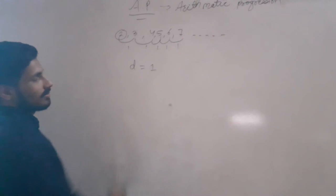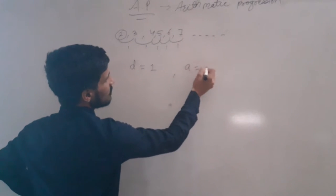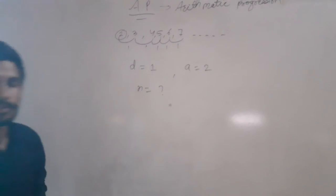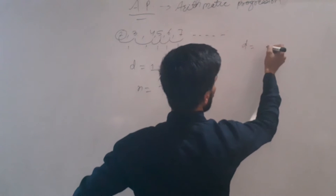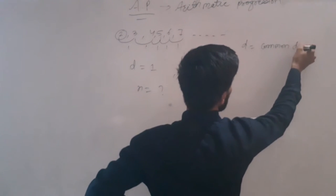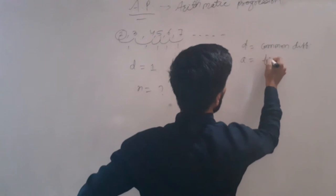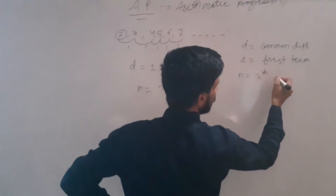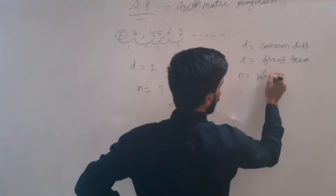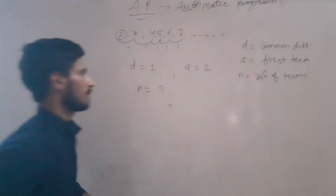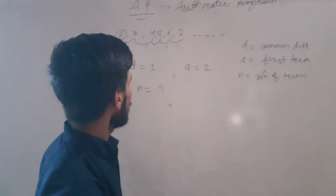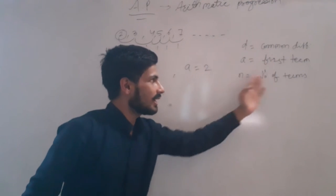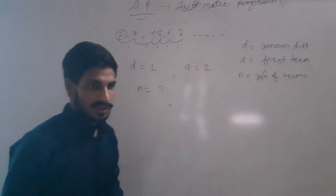This first term is called A. A means the first term — here A is 2. N is the number of terms. D is the common difference. So we have three terms to remember: A is the first term, D is the common difference, and N is the number of terms.